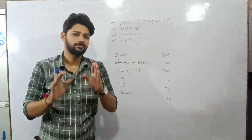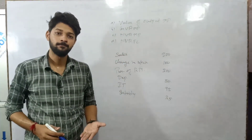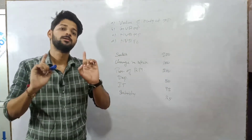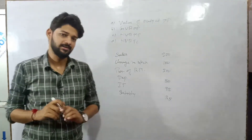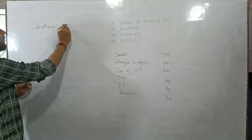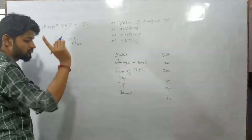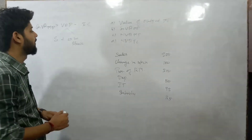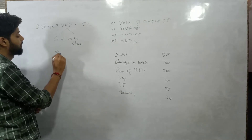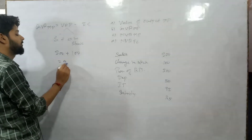In the next question in this video, you have to calculate four things: first, Value of Output at Market Price; second, Gross Value Added at MP; third, Net Value Added at MP; and last, Net Value Added at Factor Cost. The formula: GVA at MP equals Value of Output minus Intermediate Consumption; Value of Output equals Sales plus Change in Stock. Sales here are 800 and Change in Stock is 100, so Value of Output equals 900.